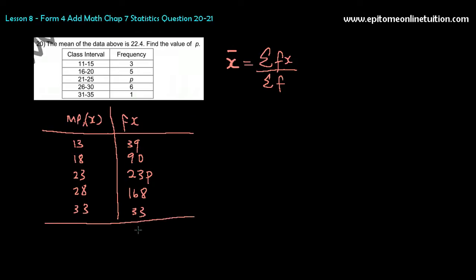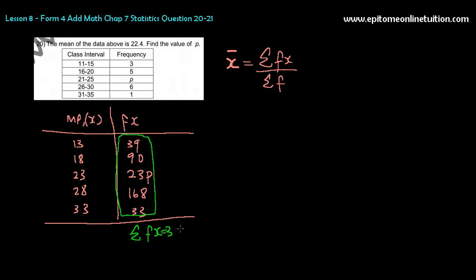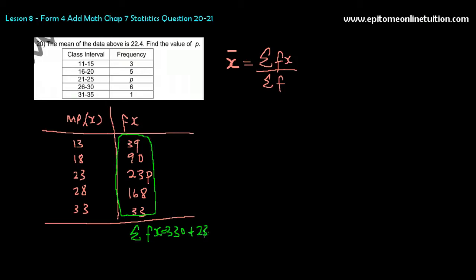Same thing here. Sum of fx means you add all of these together. Add all of them up, that will give you 330 plus 23p. So you will have the p there, so don't worry about it.